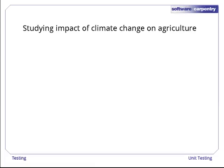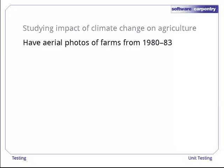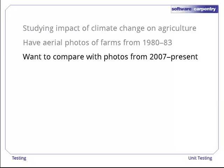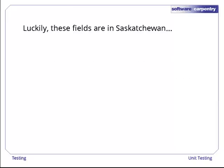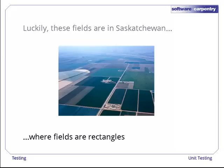Our research group is studying the impact of climate change on agriculture. We have several thousand aerial photographs of farms taken in the early 1980s. We want to compare those with photographs of the same fields taken since 2007 to see what has changed. The first step is to find regions where fields overlap. Luckily, the area we're looking at is in Saskatchewan, where fields actually are rectangular.